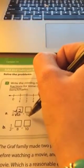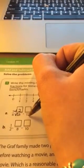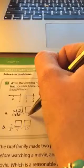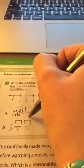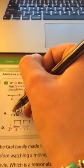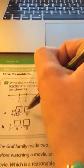4 times what number gives me 12? 4 times 3 equals 12. So since I multiplied the denominator by 3, I also have to multiply the numerator by 3. 1 times 3 equals...